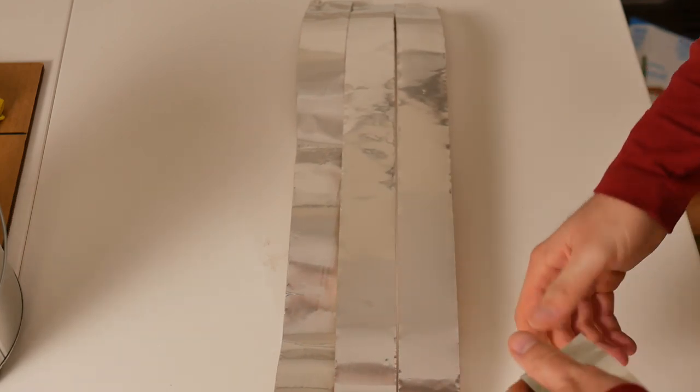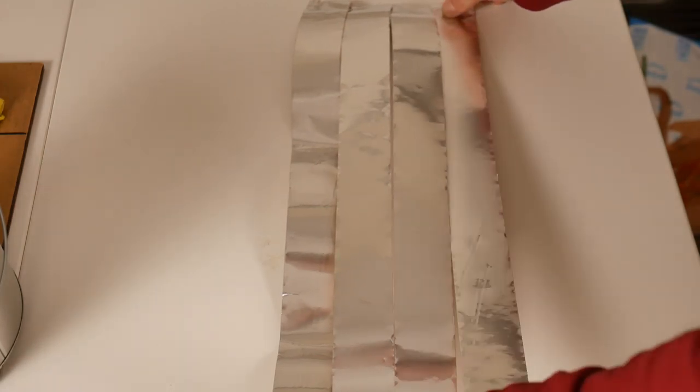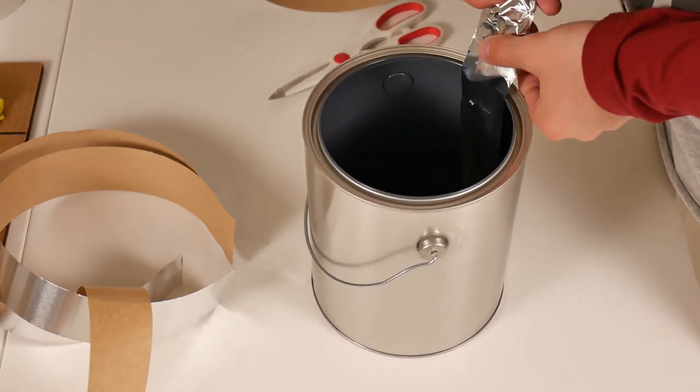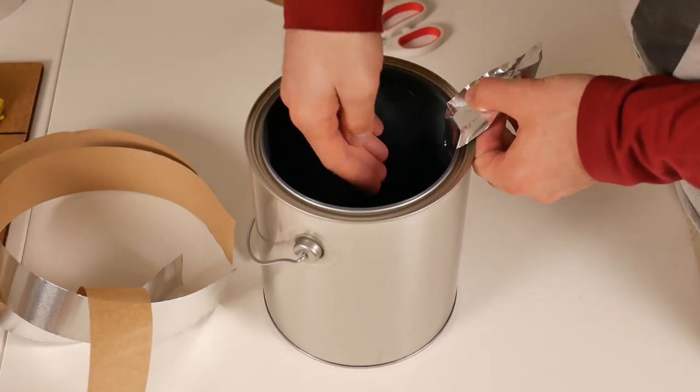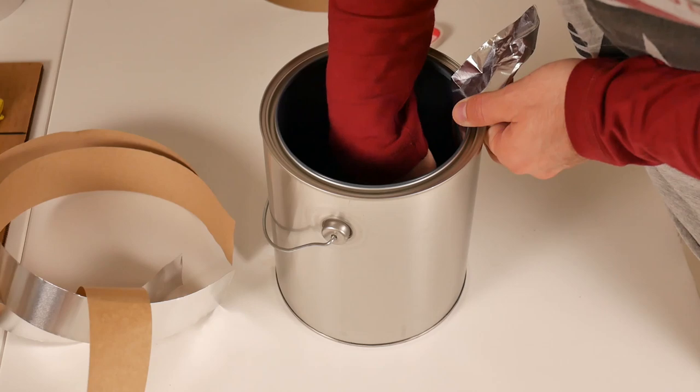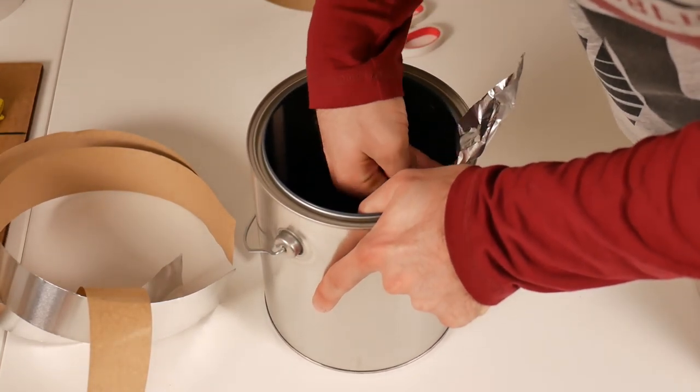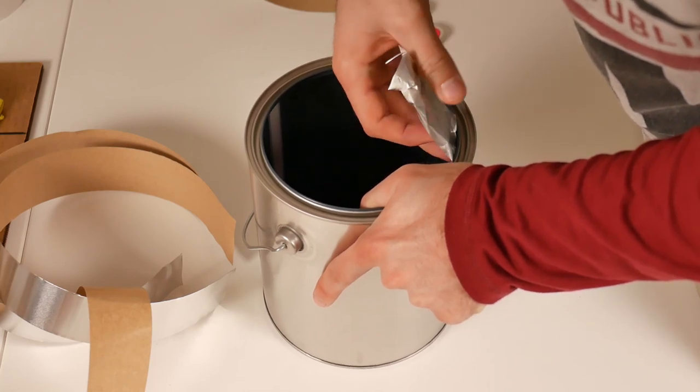And what I ended up doing was just cutting them in half after the fact and doing them where I basically reached in, put one end of the foil tape on the bottom of the bucket, and then use my hand to kind of remove any bubbles or creases and peeled towards the top.